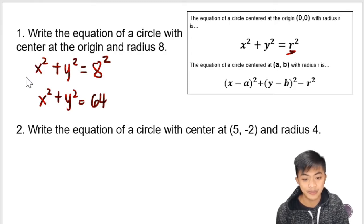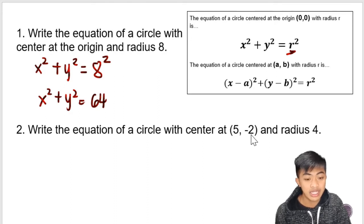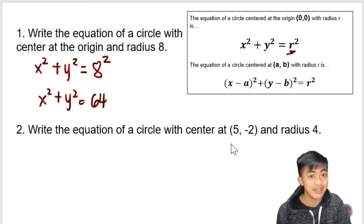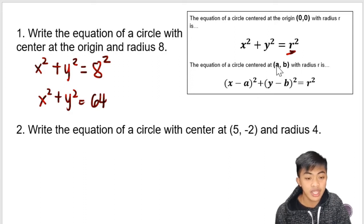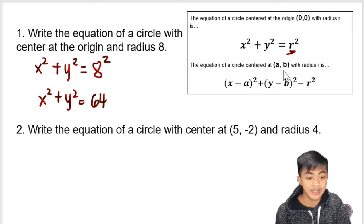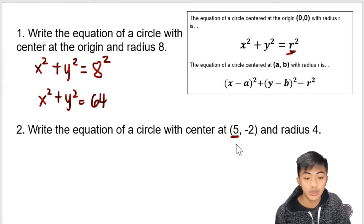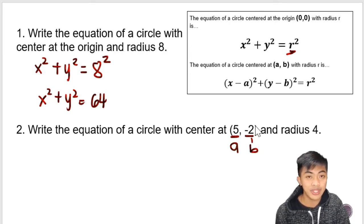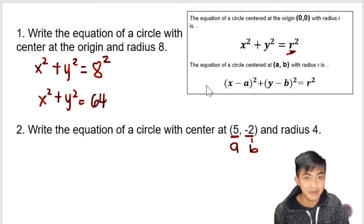Let's proceed to number two: write the equation of a circle with center at (5, negative 2) and radius 4. Since the center is not on the origin, we are going to use the general equation. According to definition, a is the x-coordinate of the center and b is the y-coordinate. So this is the center — 5 is the x-coordinate, that will be a; negative 2 is the y-coordinate, that will be b. Those are the things we're going to substitute. I hope you're following.